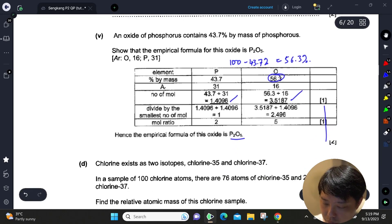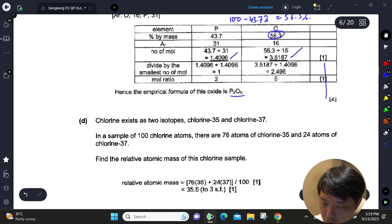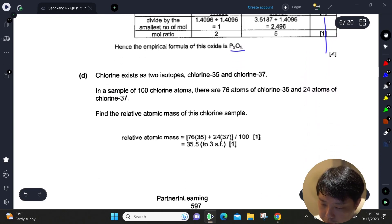Next up, we are supposed to calculate your relative atomic mass. This is standard practice. Basically, what you need to do: just take the number of atoms of each of the isotopes, multiply them together, add them up, and then divide by 100. You will get an average of 35.5.